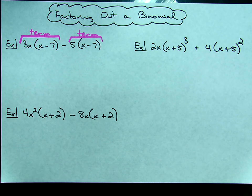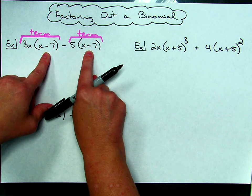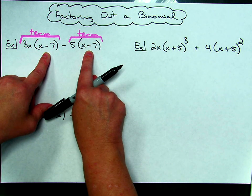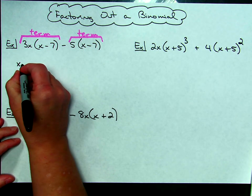I am going to factor out the greatest common factor. If I look at both terms, I see that I have an x minus 7 in both of them, and that happens to be a binomial. So I'm going to take that out as a binomial, x minus 7.